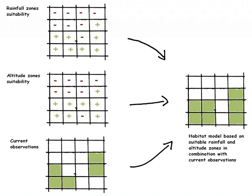Machine learning techniques include Maxent, artificial neural networks, genetic algorithm for rule set production GARP, boosted regression trees BRT, gradient boosting machines GBM, random forest RF, and support vector machines SVM.